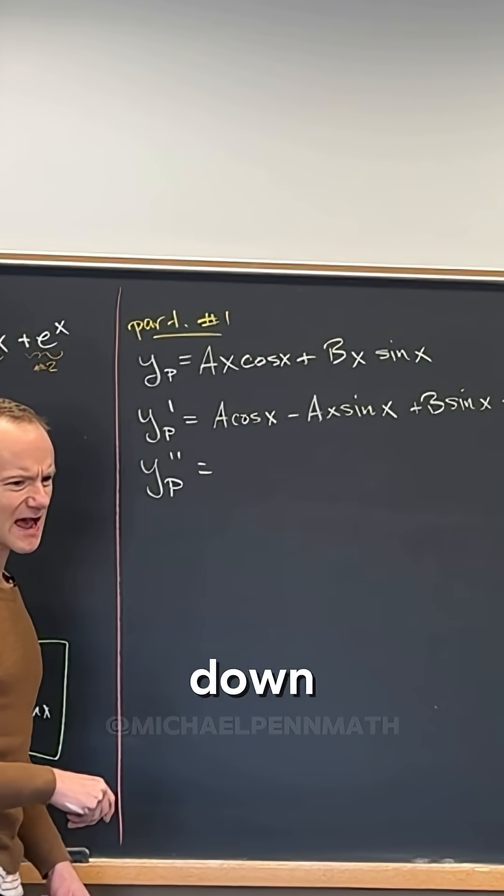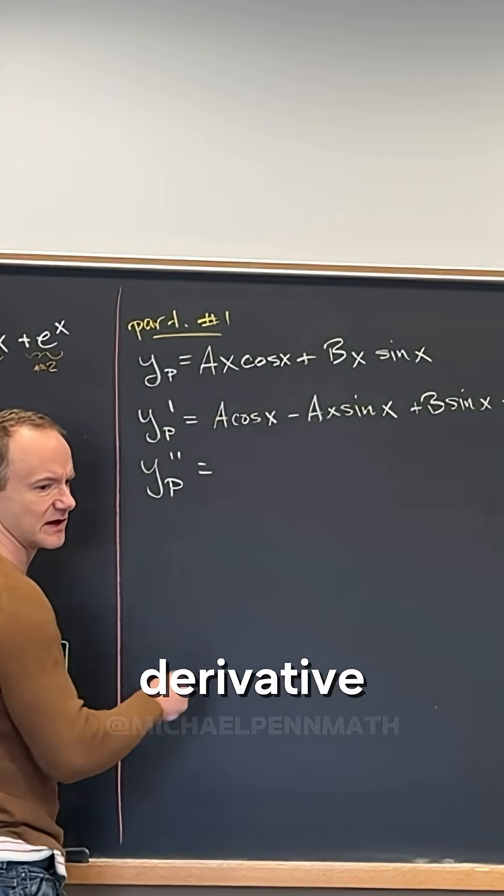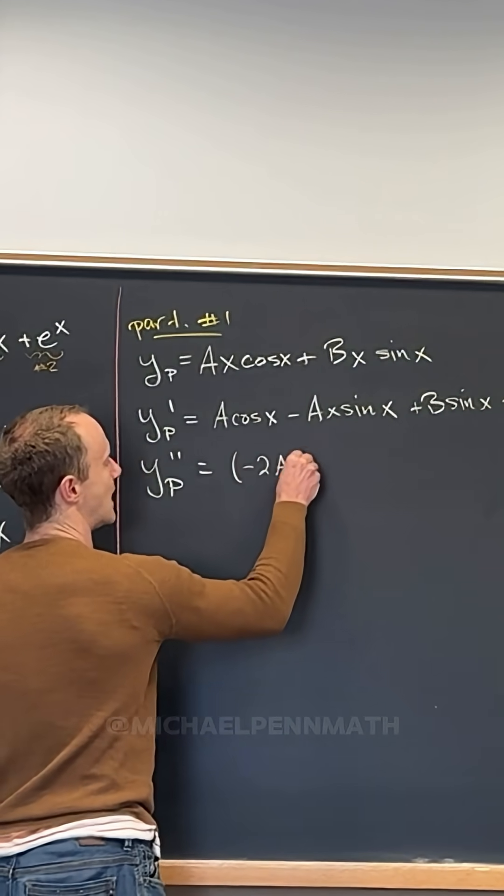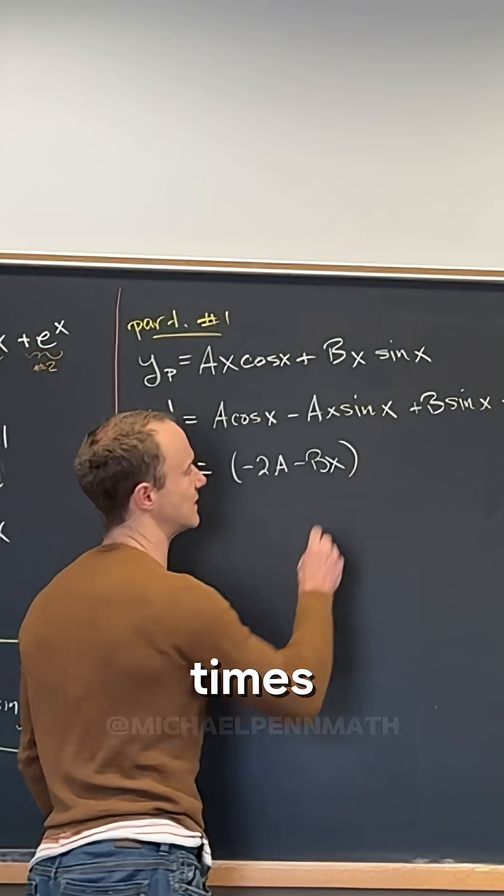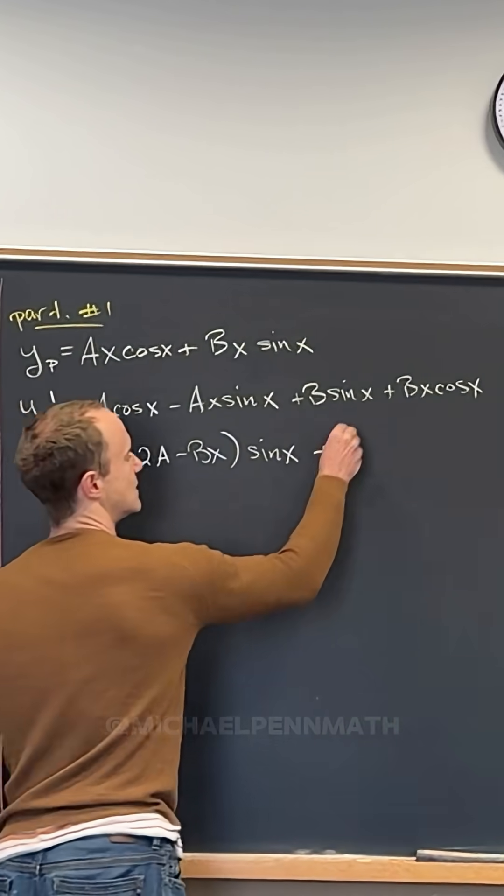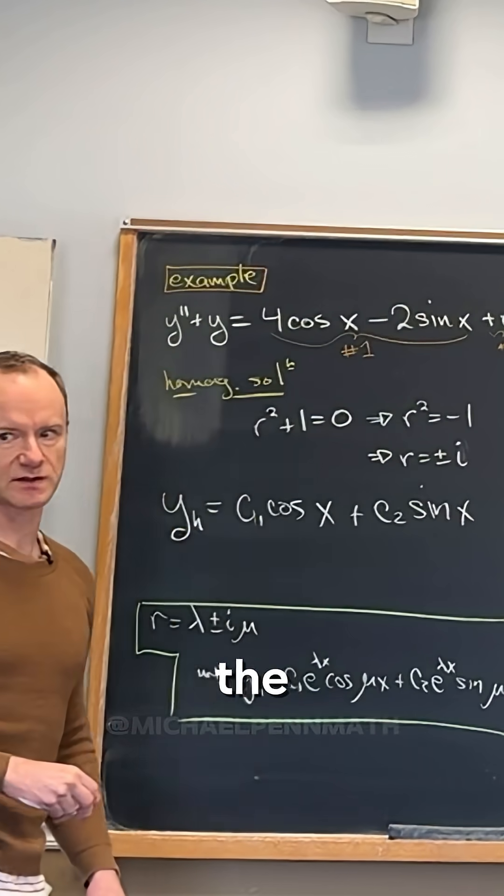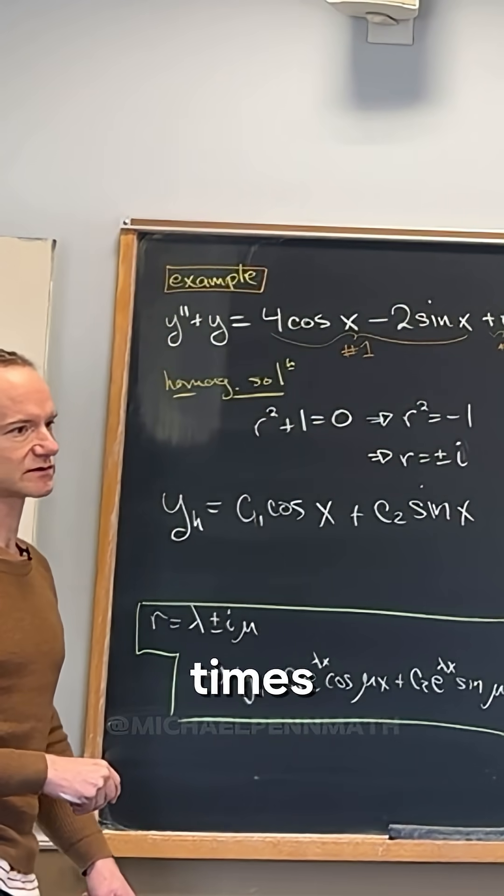Then maybe I'll just write down the second derivative. Here's what you get: minus 2a minus bx times sine x, and then plus minus ax plus b times cosine x. That's the second derivative, just by using the product rule carefully a few times.